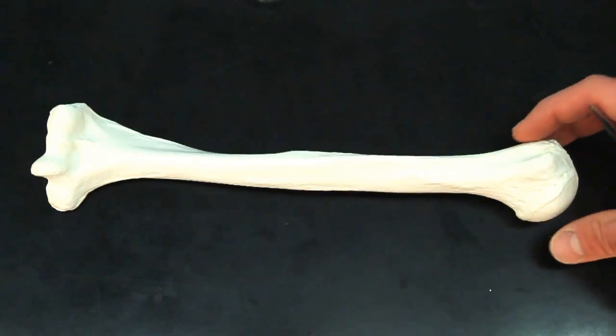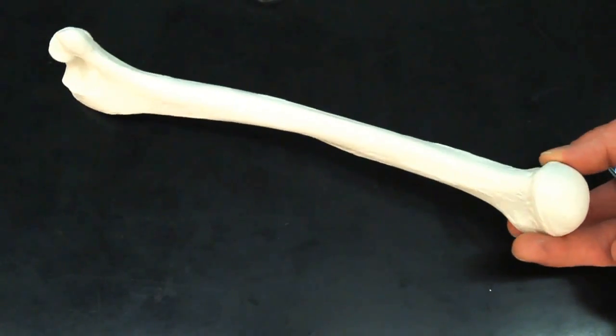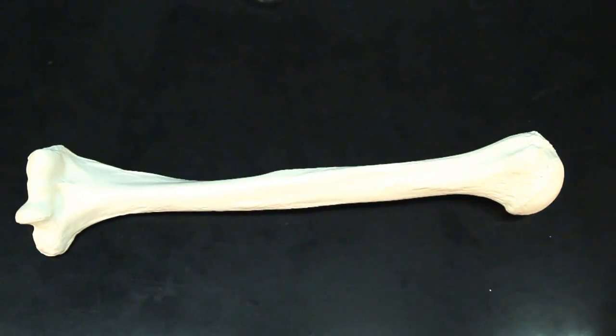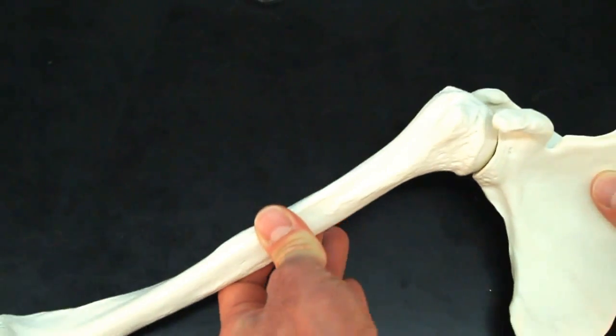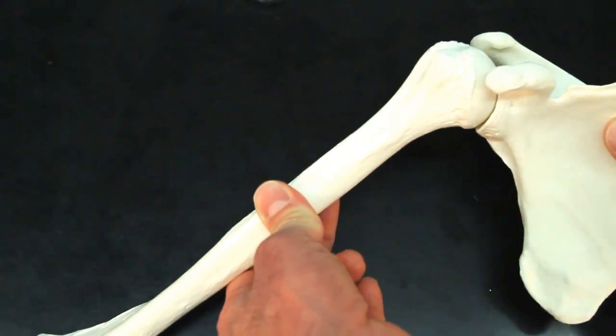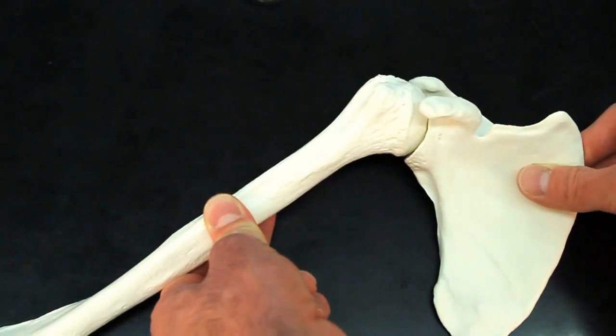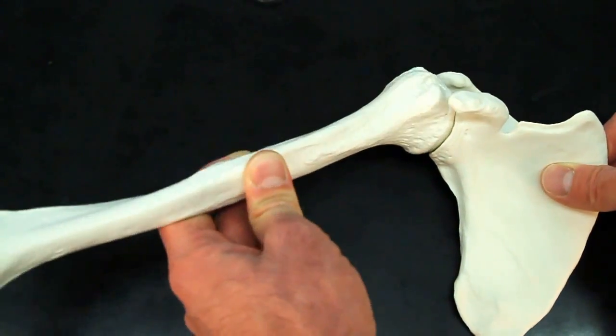Well, the head of the humerus, see this nice round section, that's going to articulate with what? What does it connect to? Hopefully you're thinking it connects to the glenoid fossa, forming your shoulder joint. So it articulates with the glenoid fossa of the scapula.